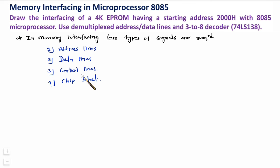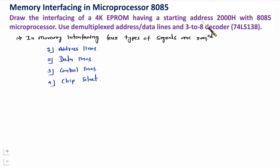These four categories of signals need to be identified. Address lines and data lines are identified based on the size of memory, control signals are identified based on which type of memory is given, and finally I'll explain how to identify chip select. The example question is: draw the interfacing of 4K EEPROM having a starting address of 2000 hex with the 8085 microprocessor, using demultiplexed address-data lines and a 3-to-8 decoder, 74LS138.